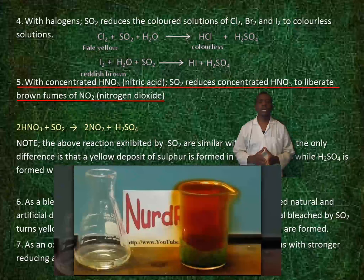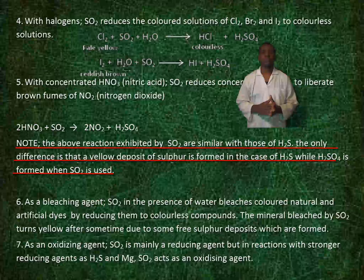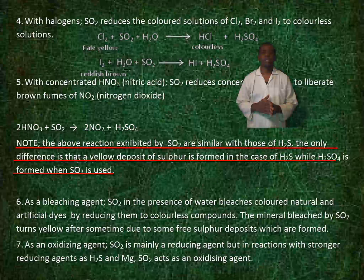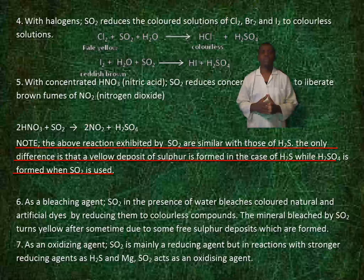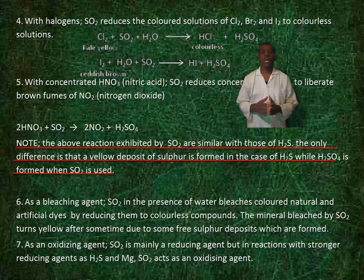With concentrated nitric acid, sulfur dioxide reduces concentrated nitric acid to liberate brown fumes of nitrogen dioxide. Note: the above reactions exhibited by sulfur dioxide are similar to those of hydrogen sulfide. The only difference is that a yellow deposit of sulfur is formed in the case of hydrogen sulfide, while sulfuric acid is formed when sulfur dioxide is used.